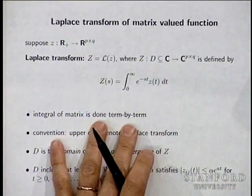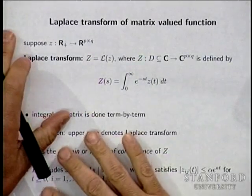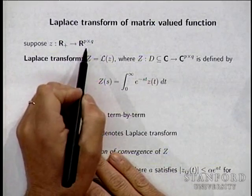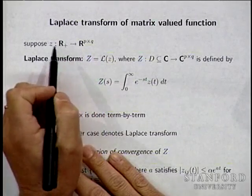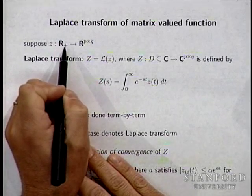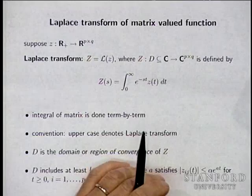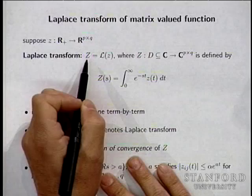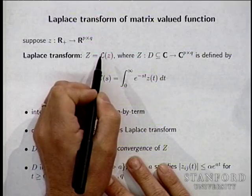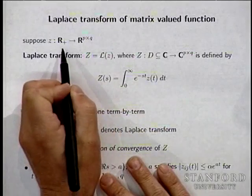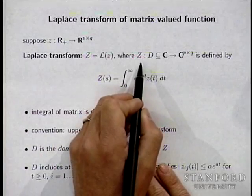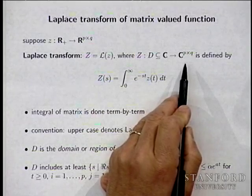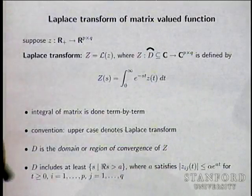The first thing we'll do is solve this by Laplace transform. Suppose you have a function that maps R-plus into p-by-q matrices. So z itself is a function that maps non-negative scalars into p-by-q matrices — it's a p-by-q matrix-valued function on R-plus. Now the Laplace transform, written with a script L, is an operator that takes as argument a function of this form and returns the Laplace transform, which is a function from some subset of the complex plane into complex p-by-q matrices.